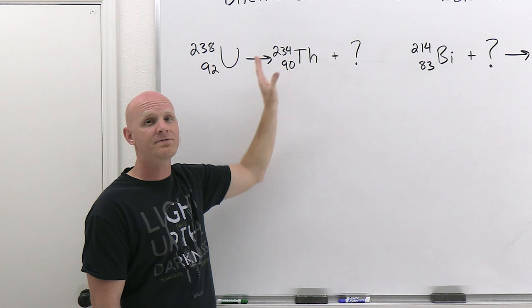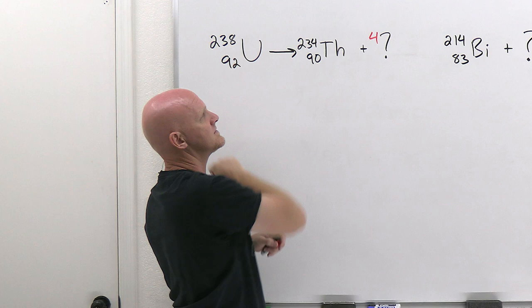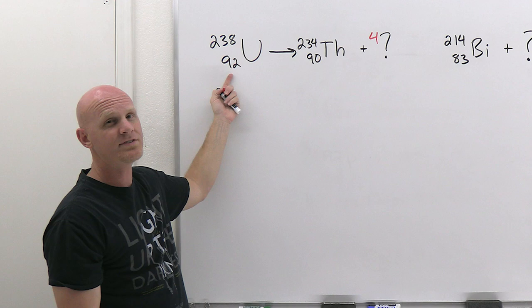So if we look on the left-hand side, the mass number is 238, so the total mass numbers are going to have to sum up to 238 on this side. Well, we've already got 234 here, which means that our mystery particle is going to have to have a mass number of 4. That way 234 plus 4 adds up to 238.